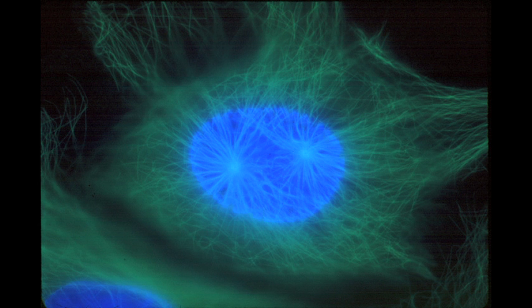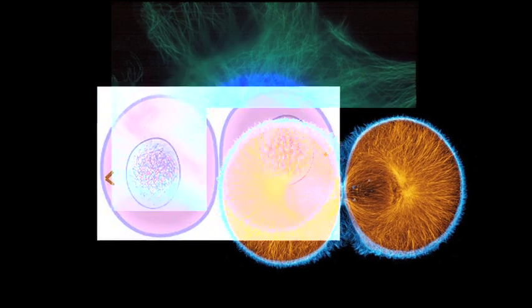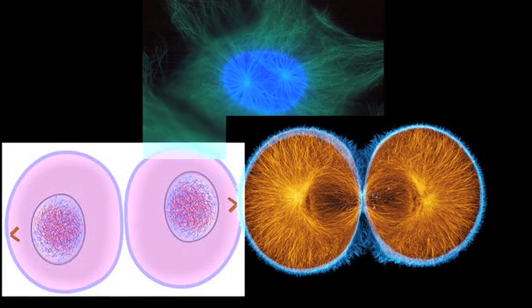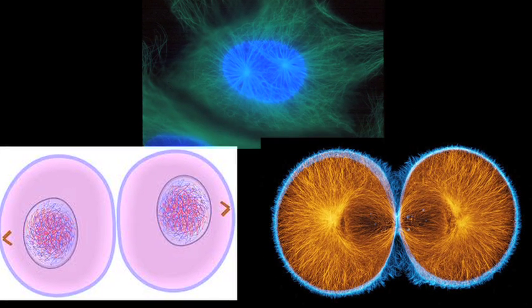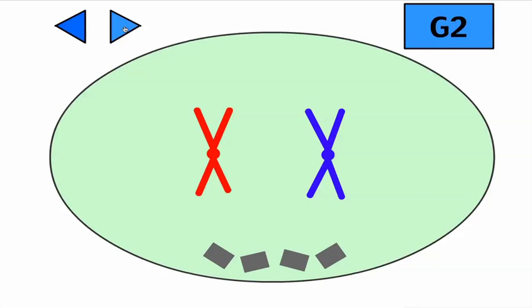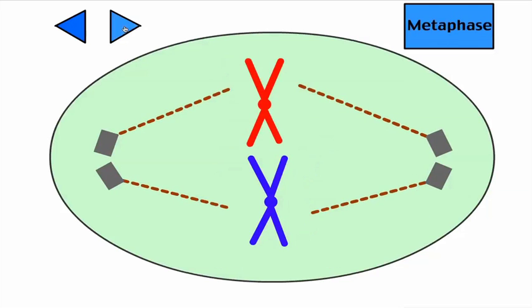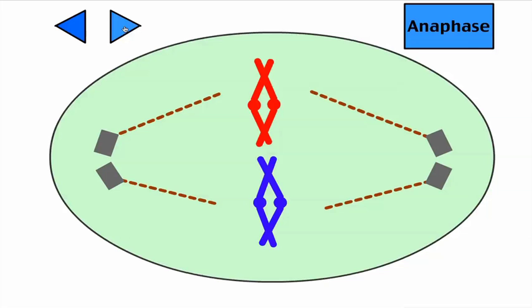The separation of nucleus, that is karyokinesis, and the separation of cytoplasm, is cytokinesis, together form the mitotic phase of cell division. The process of mitosis comprises different stages: prophase, metaphase, anaphase, and telophase.